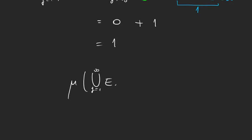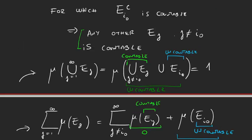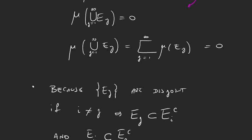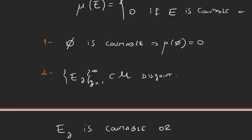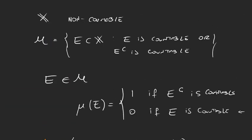Mu of the union is equal to the sum of the mu's. And this is the second property we wanted to prove. So we were able to prove both properties in the definition of a measure, so we can conclude that this function is a measure.